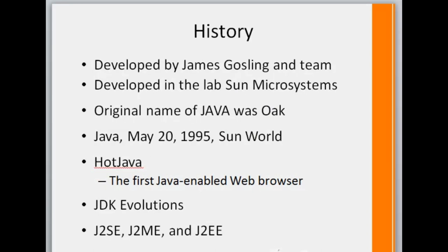Let's talk about the history of Java. Java was developed by James Gosling and team in the laboratory of Sun Microsystems. Originally it was named Oak, but later on due to some copyright issues and other problems they had to rename this product and it was later named Java. Java was released on May 20, 1995 by Sun World. The first Java enabled web browser was HotJava.